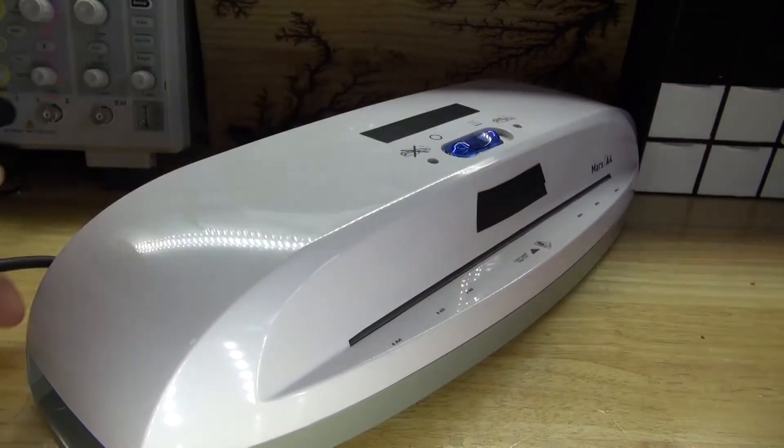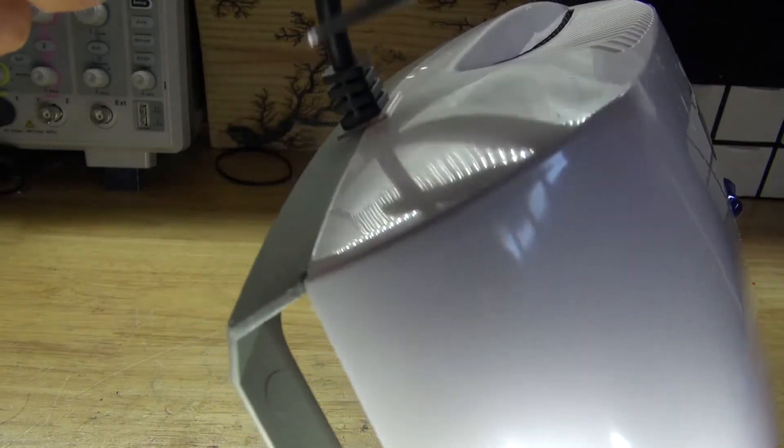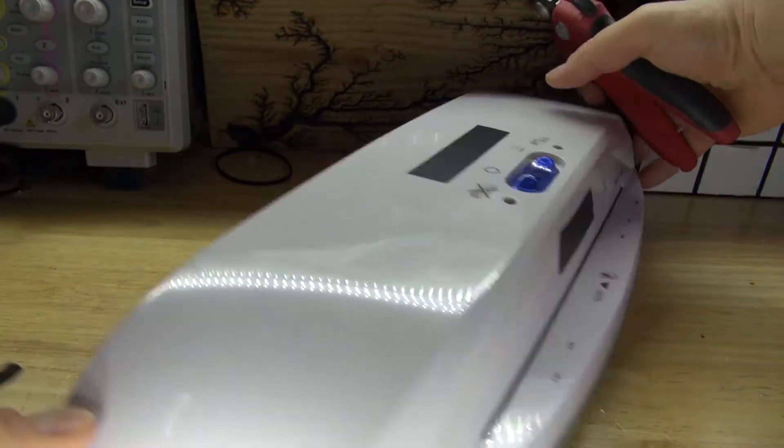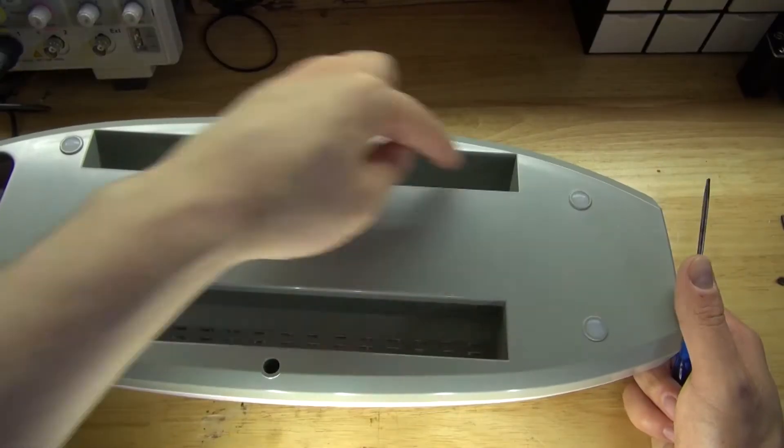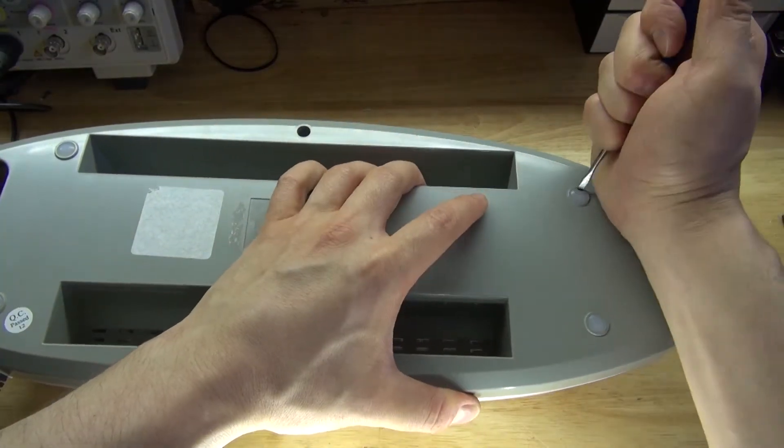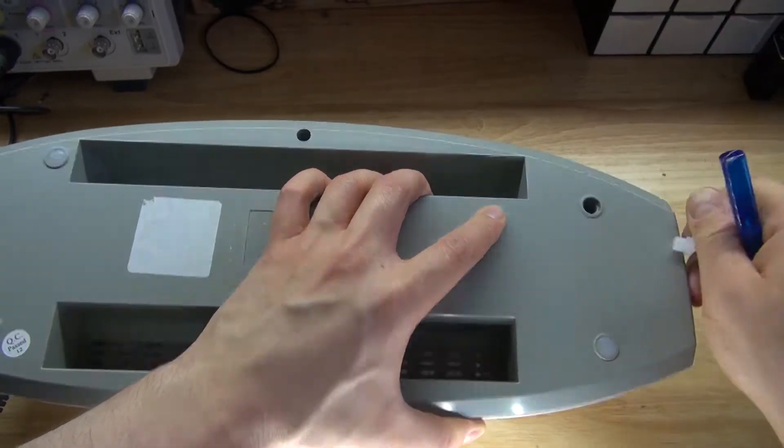First what I'm going to do is cut off the electrical cord since it's not needed. Next I'm going to remove all of the rubber feet because underneath each of these rubber feet contains screws.